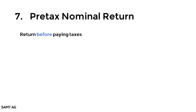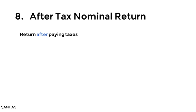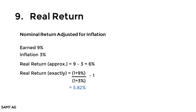Pre-tax nominal return is simply the return before paying taxes. Keep in mind that interest and dividend income, short-term and long-term capital gains are generally taxed at different rates. After paying these taxes, you get the after-tax nominal return. The real return is the nominal return adjusted for inflation — for example, a 9% return with 3% inflation gives an approximate real return of 6%, or an exact real return of 5.82%.